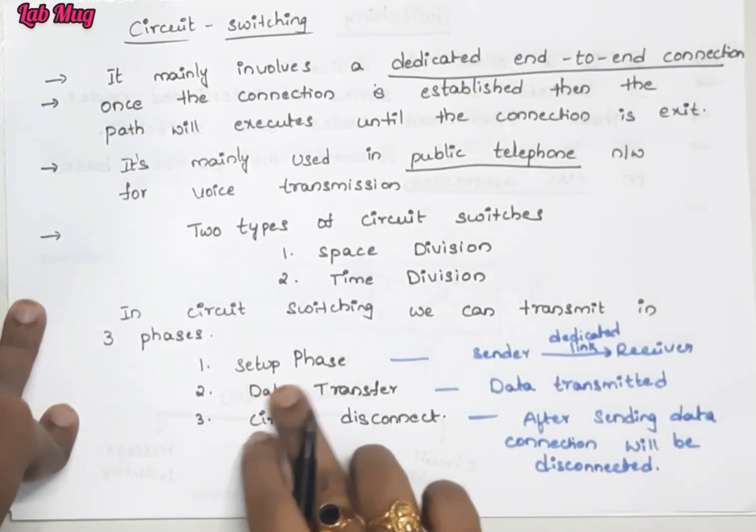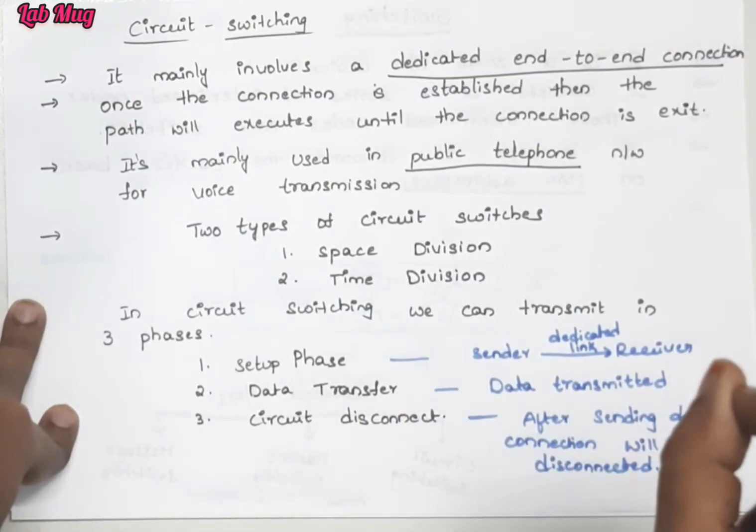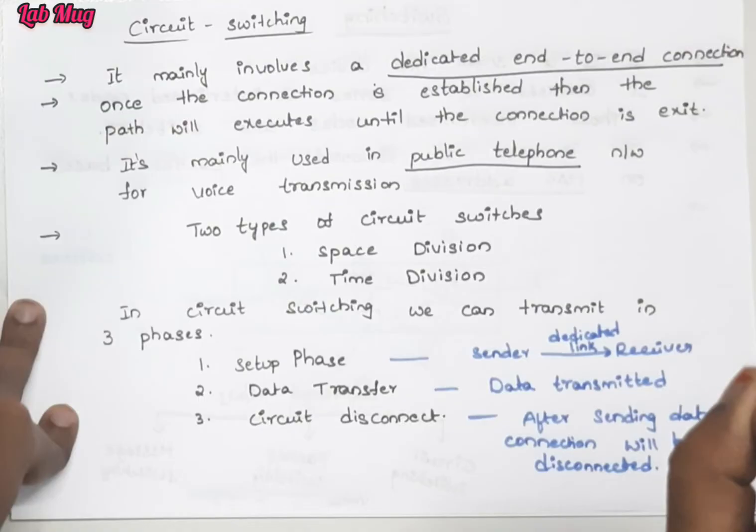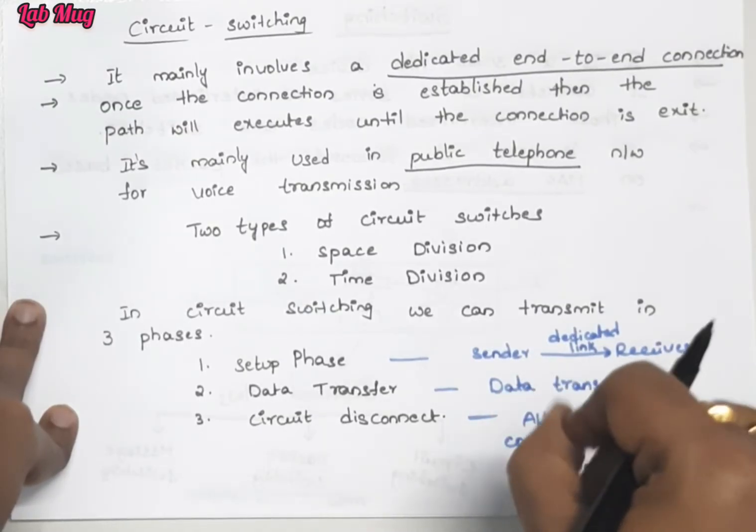You can also write advantages and disadvantages for better marks. The two types in circuit switching - space division and time division - we'll see in detail. Before that, there are three phases in total: setup phase, data transfer phase, and circuit disconnect. Keep the previous example in mind. First we make the call.